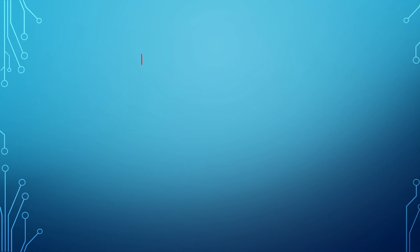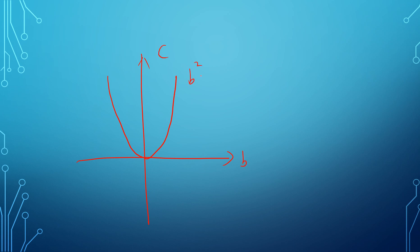On the bc-plane, the parabola b² = c divides the plane into two regions: the region where b² < c (inside the parabola) and the region where b² > c (outside). All we need is to find the ratio of the large blue region — where b² > c — over the whole bc-plane, and that ratio is the probability.